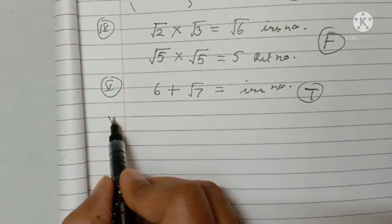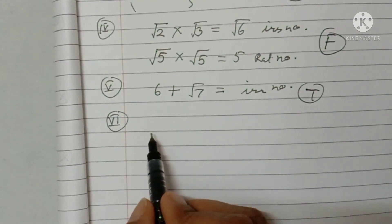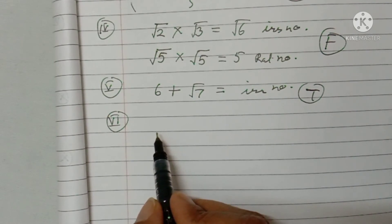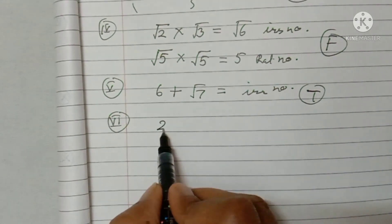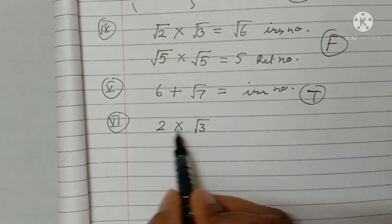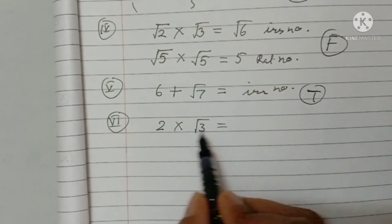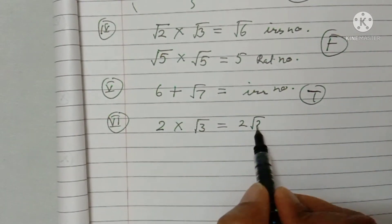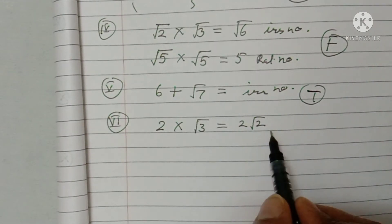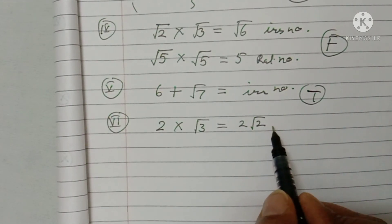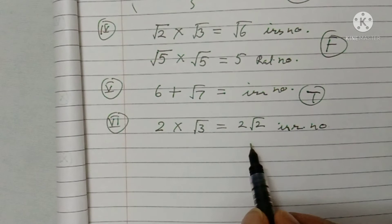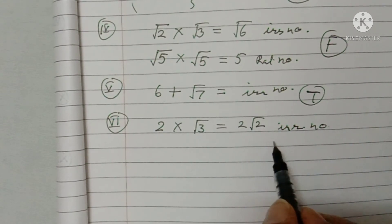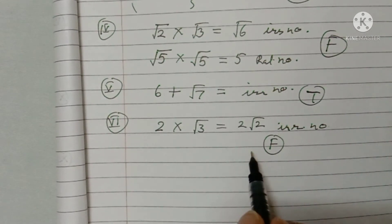Part six: the product of a non-zero rational number and an irrational number is a rational number. Take a rational number multiplied by √3 (irrational). The result is irrational. The statement says you always get a rational number, so this is a false statement.